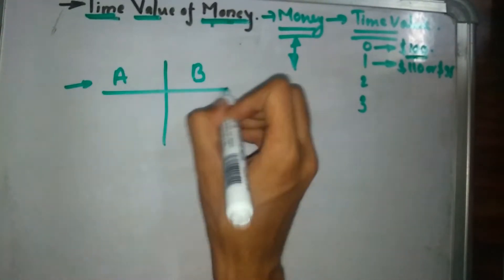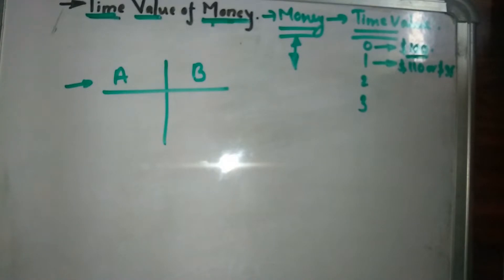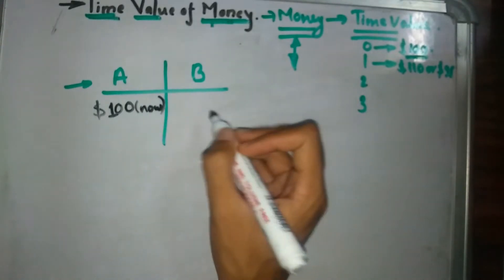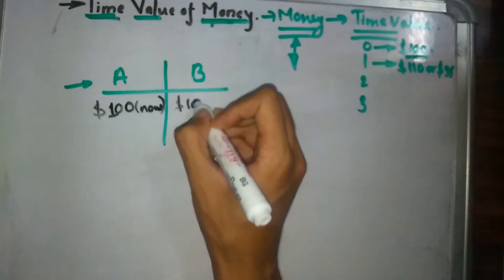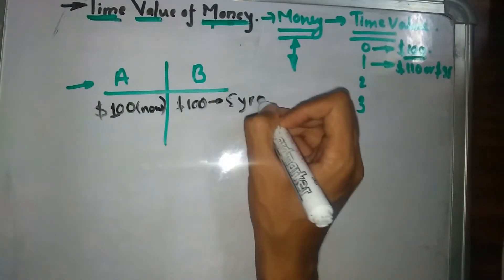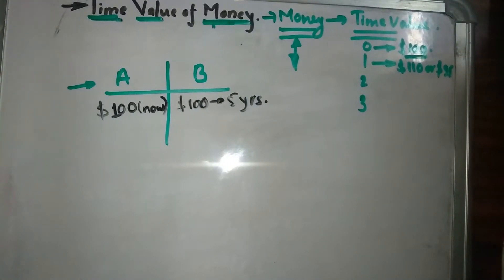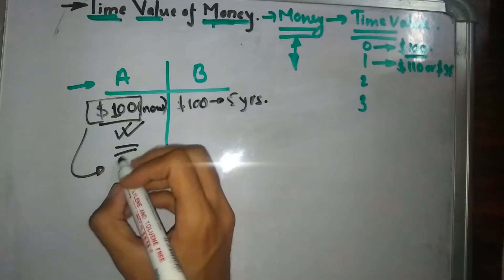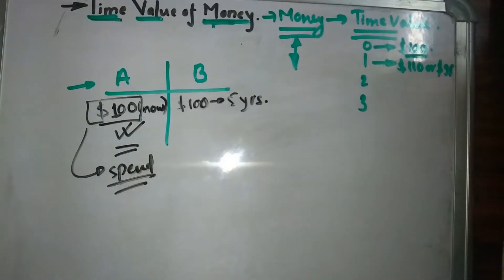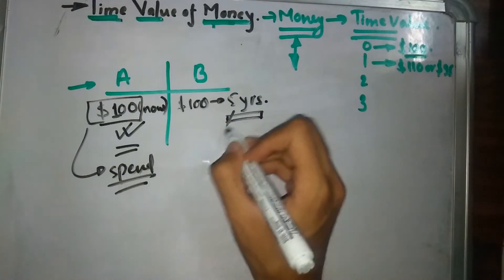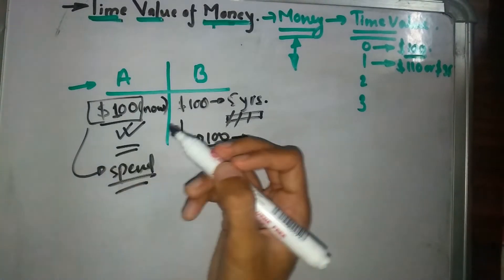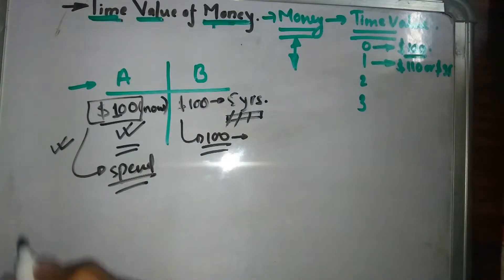Let's begin with an example. We have two options: Option A — you can choose $100 right now; Option B — you can choose $100 in a time period of five years from now. Which option are you going to choose? Without any knowledge of economics or finance, of course you're going to choose Option A, because you're getting $100 right now and you can use it to spend. If you wait five years, you just get the same $100 with nothing in return.